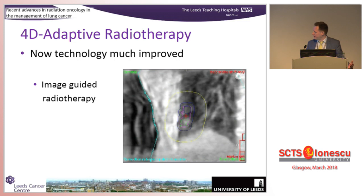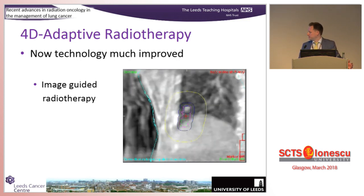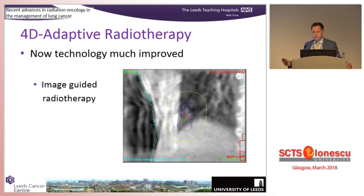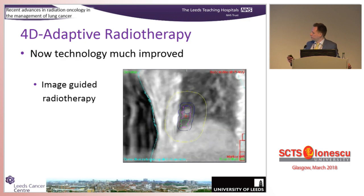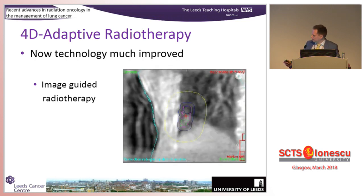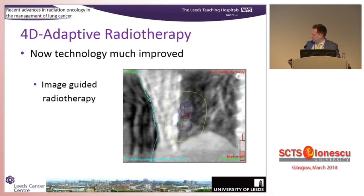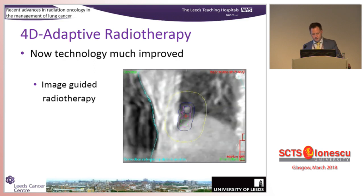As time moves on, we can now look at 4D. This is a patient who has a small tumour in the right lower lobe. We've allowed for the tumour motion in our planning algorithm, but we want to check that the tumour is still within that. So we can perform what's called a 4D cone beam, and you can see that our tumour nicely conforms to the shape we've allowed for, so we can be very confident with delivering that dose.